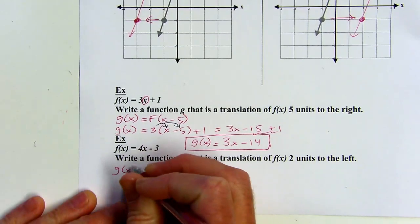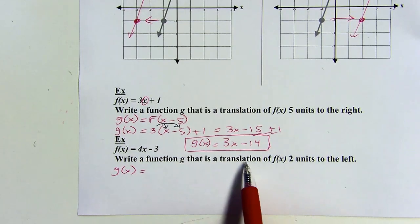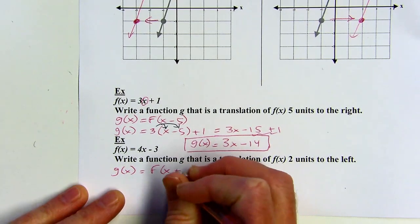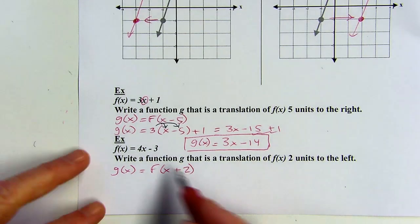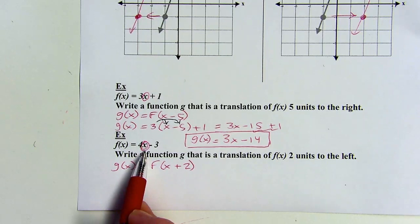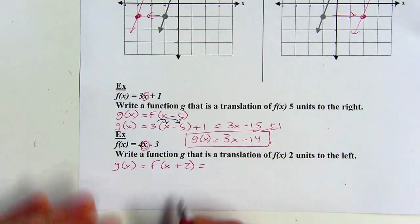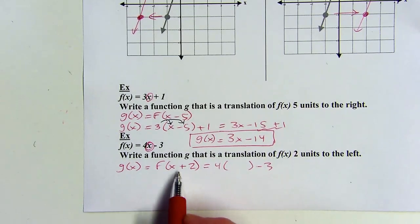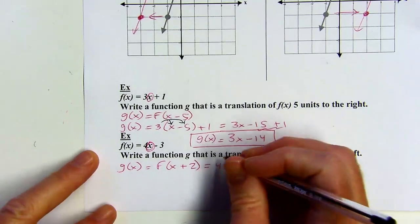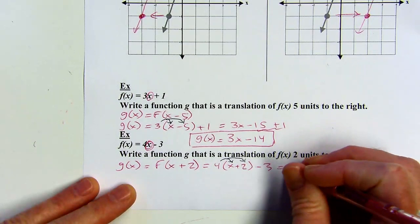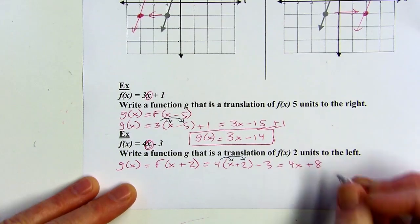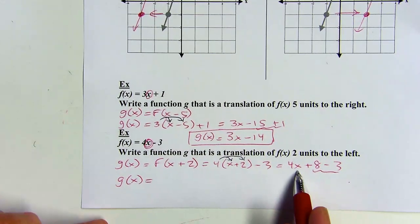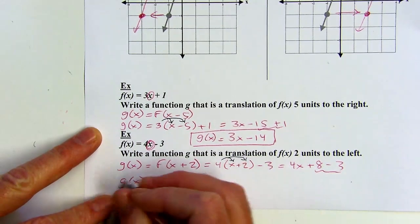Let's try another — write function g as a translation of f of x two units to the left. When we go to the left, we're adding to the input, so my new function is f of x plus 2. I input x plus 2 into that function: 4 times something minus 3, where the something is the quantity x plus 2. Distributing the 4 gives 4x plus 8, and I still get minus 3. Combining 8 and negative 3 gives 5, so g of x equals 4x plus 5.